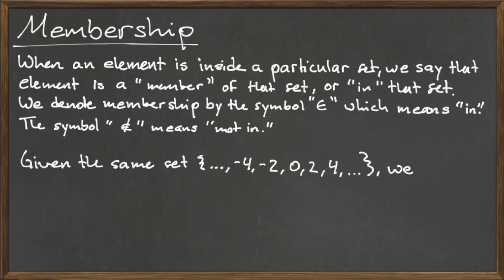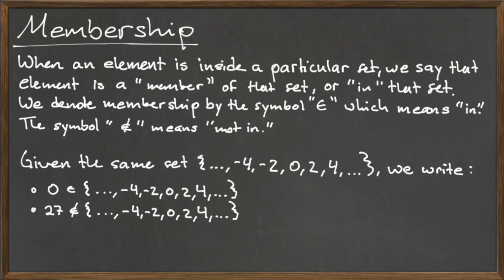Using the set and examples from the previous slide, we can write this, which translates to 0 is a member of the set of even integers. Likewise, we can write this, which is read as 27 is not a member of the set of even integers. Try determining if the numbers 110 and 359 are members of the set of even integers, and write this using the membership notation.